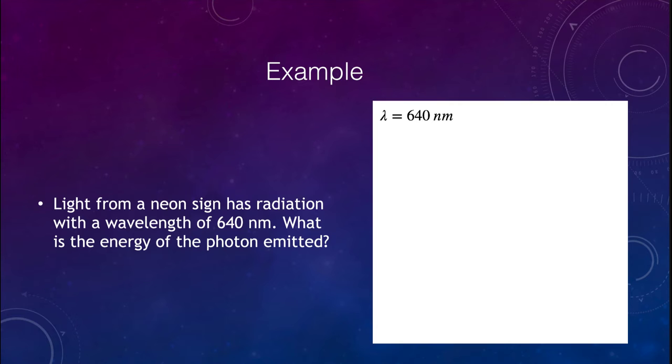Now let's look at some examples. We're going to look at light from a neon sign that has a wavelength of 640 nanometers, and we want to find the energy. Energy is equal to h, Planck's constant, multiplied by the frequency. Because we know that the speed of light is equal to the product of the frequency and the wavelength, we can solve for frequency being the speed of light divided by the wavelength.